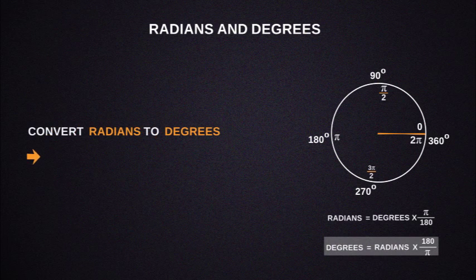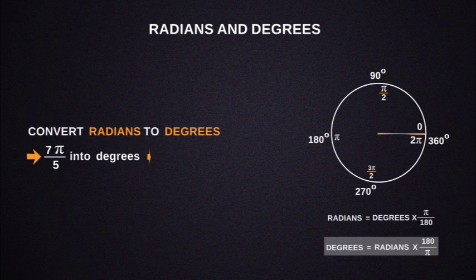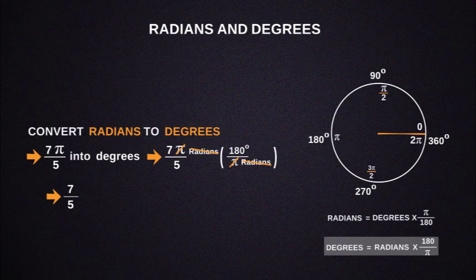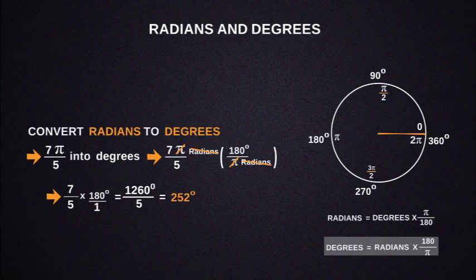Now let's see how to convert 7 pi by 5 radians into degrees according to the formula. We compute 7 pi by 5 radians times 180 degrees by pi radians. The pi and radians units cancel, giving us 7 by 5 times 180. After simplification, we get the final value of 252 degrees.